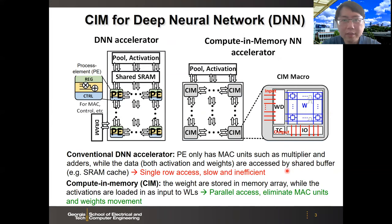Let's first look at the basics of computing memory. Here we compare with conventional deep neural network accelerators with ASIC CMOS implementations. The typical design has many processing elements (PEs) with digital multipliers and adders. In the conventional accelerator, the weights and activations of the neural network model are stored in the global buffer, for example a shared SRAM cache, and then they are fetched into the computing units, PEs, for the actual computation. The data transfer between the global buffer and the PEs becomes a bottleneck of performance.